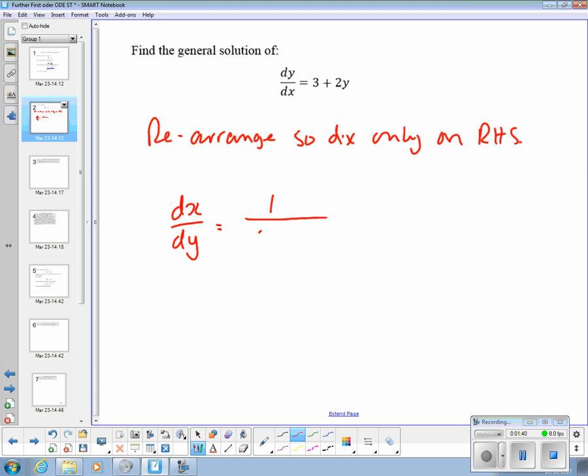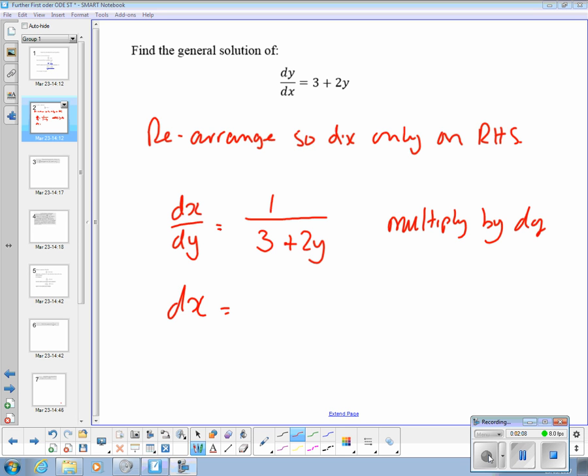1 over 3 plus 2y. And then multiply by dy, so we've got dx is equal to dy over 3 plus 2y.